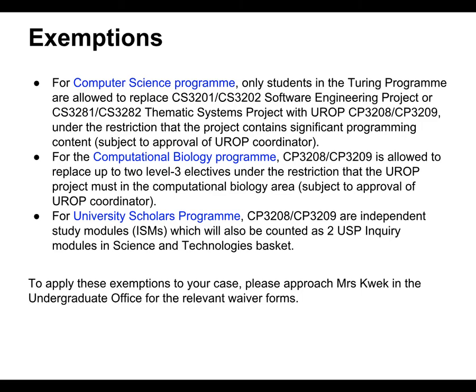There are some small exceptions. For CS students in the Turing program, a specific clause applies. For USP students, UROP counts for two ISM modules. If you want to apply for any of these exemptions, you apply after you complete your UROP — you do it, then apply for the exemption.